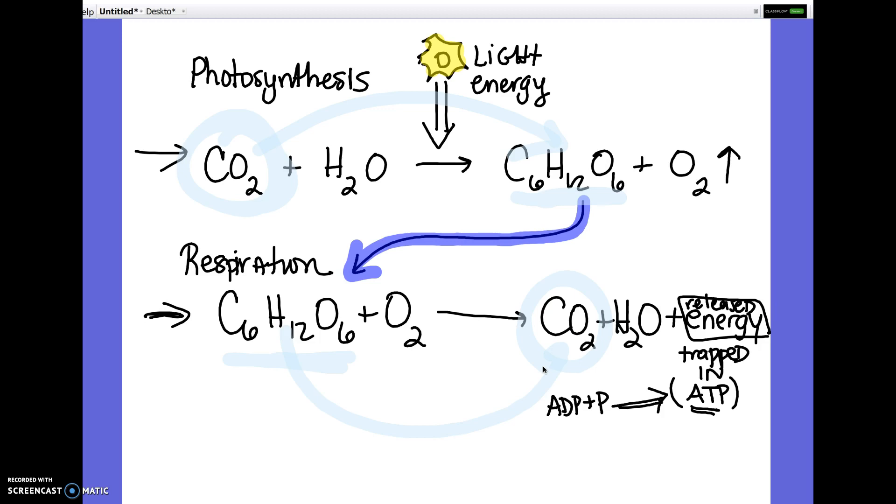If it was in the dark, only cell respiration was happening, which means the levels of carbon dioxide would have gone up. Now, if it was in the light, even though cell respiration was still happening, we put it in a really bright light. So there was more photosynthesis happening than cell respiration. So the carbon dioxide levels were going down because photosynthesis was taking carbon dioxide out of the solution.